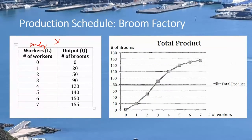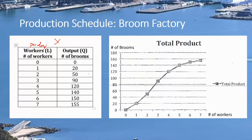We've got the output listed here. These are made-up numbers that conform with the assumption about increasing and decreasing returns. So these numbers are associated with the output that comes about when we hire different numbers of workers. Notice that it doesn't rise equally or at the same rate — it's 20 units for the first worker, 50 in total for two workers, 90 for three workers, and so forth. If we plot this schedule, we get the graph that appears here.